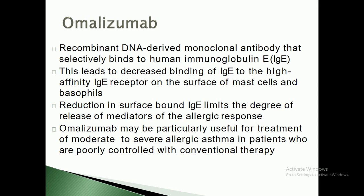Omalizumab is another agent — a recombinant DNA-derived monoclonal antibody that selectively binds to the human immunoglobulin E, called the IgE antibody. This leads to decreased binding of IgE to high-affinity IgE receptors on the surface of mast cells and basophils. Reduction in surface-bound IgE limits the degree of release of mediators of the allergic response.